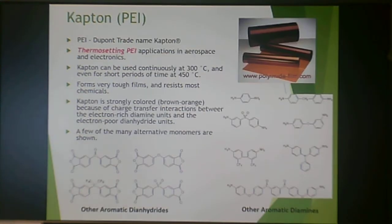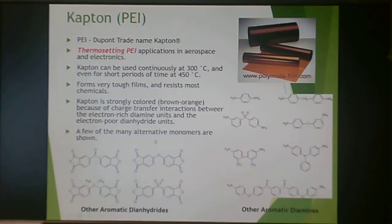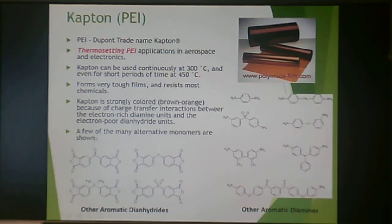This is the thermosetting version, Kapton. It's often done as films or coatings and is very resistant to chemicals. Now it is thermosetting, which means it crosslinks and can't be reprocessed. It has a very strong brown-orange color because you have electron-rich diamines and electron-poor dianhydride units — chemistry-speak for a chromophore, something that creates color. There are many different ways to make Kapton, but they're thermosetting, so not the kinds processed in traditional thermoplastic equipment. The reason you'd choose Kapton is you can use it continuously at 300°C with no issues, and for short periods at 450°C with no issues.